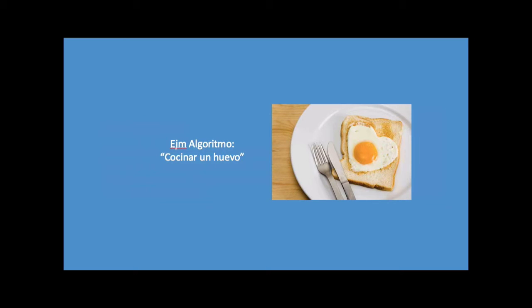Vamos a un ejemplo. Si yo quiero cocinar un huevo y quiero que ese huevo tenga determinada forma, determinado color y determinado sabor, tengo que cocinarlo de cierta manera y utilizar ciertos elementos. Lo complejo está en que si yo quiero darle una instrucción a otra persona de que prepare el huevo exactamente de la misma manera, tengo que ser muy específico en cada uno de los puntos que se necesitan para cocinarlo.